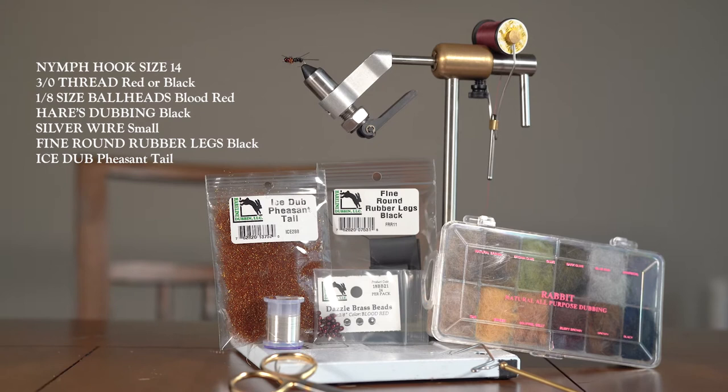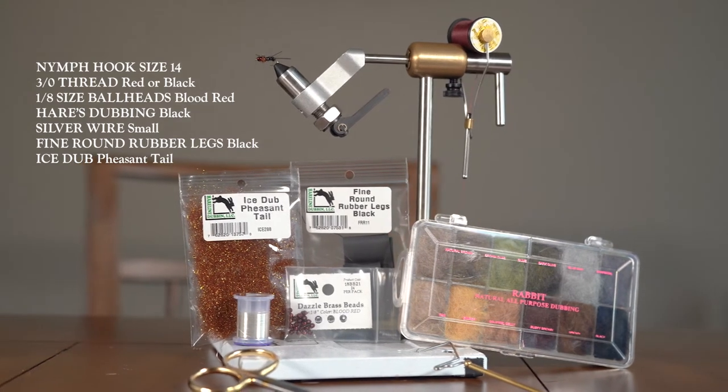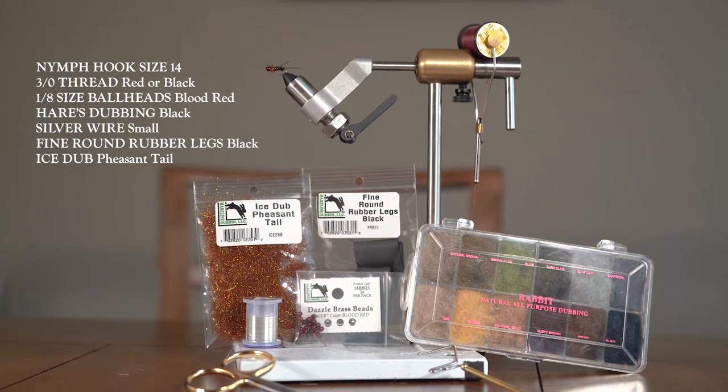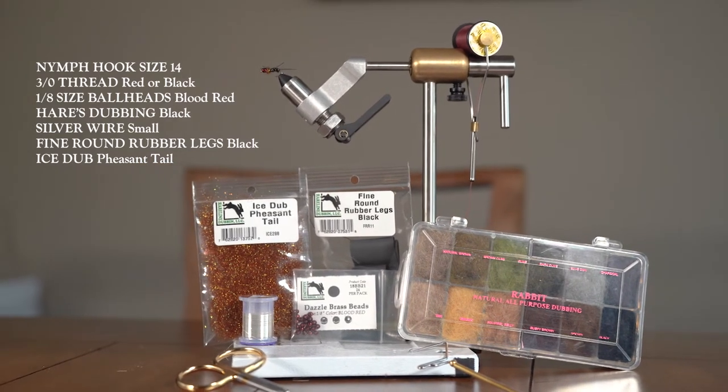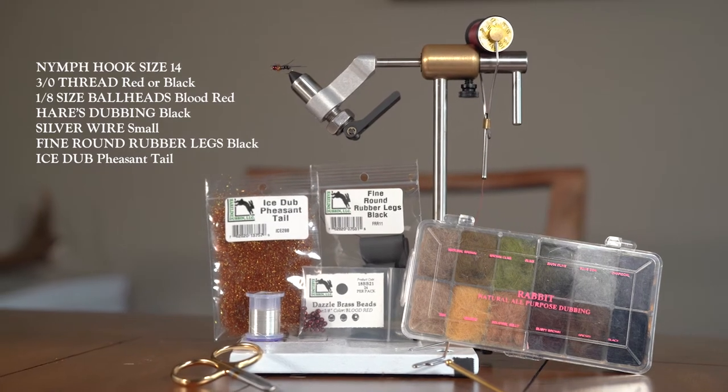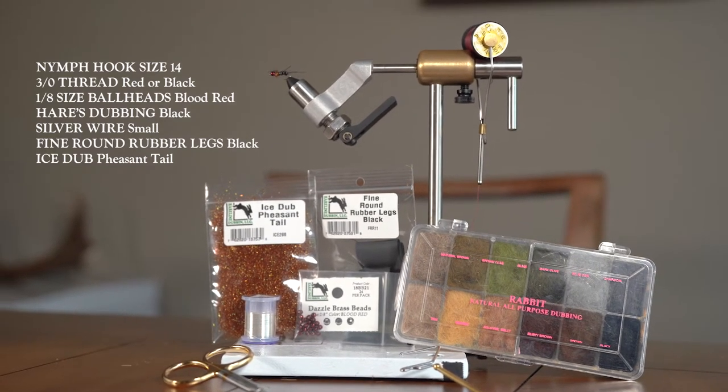To tie this fly you will need a size 14 nymph hook, 3-0 red or black thread, a pack of 1/8th red beadheads, black hair stubbing, small silver wire, black fine round rubber legs, and a pack of ice dub in the pheasant tail cover. I will leave a link to each of these materials in the description below.